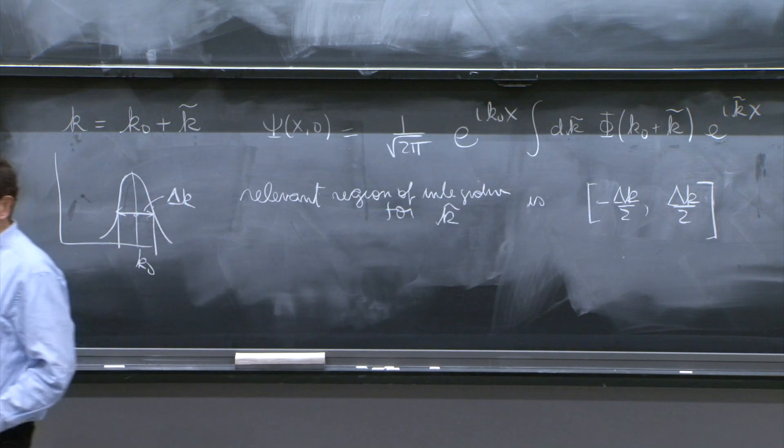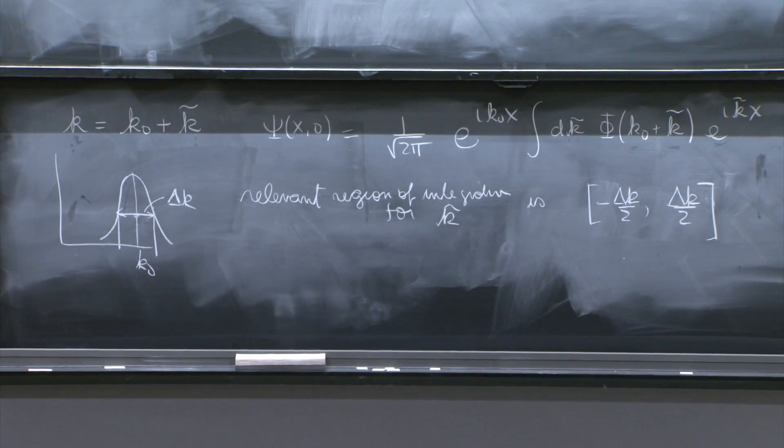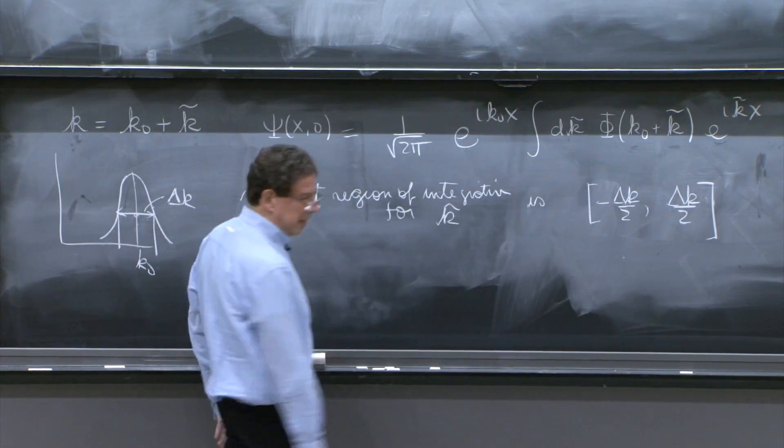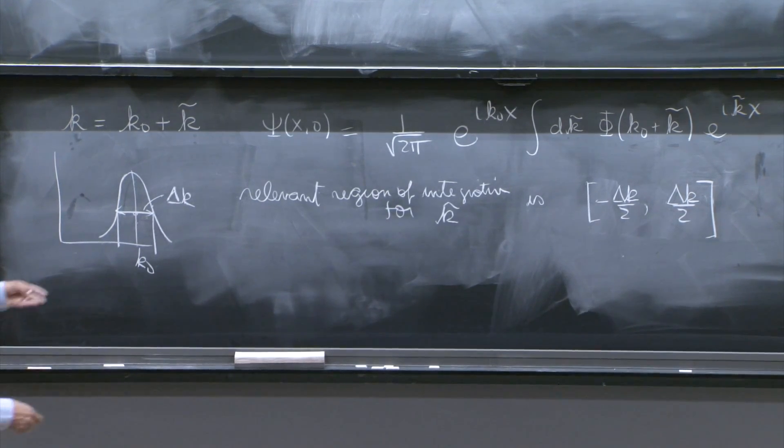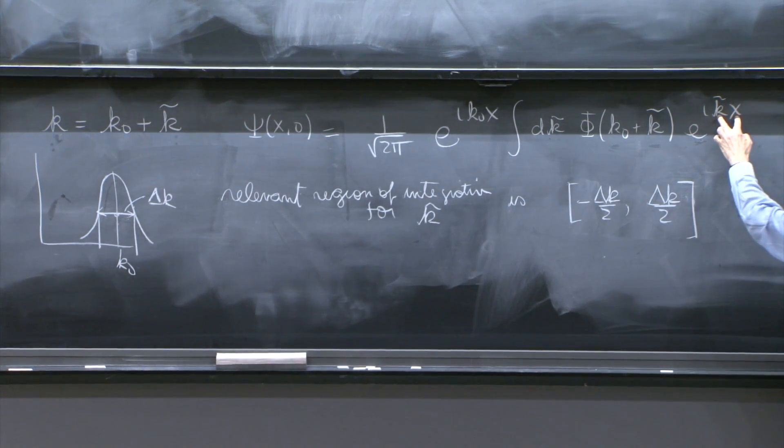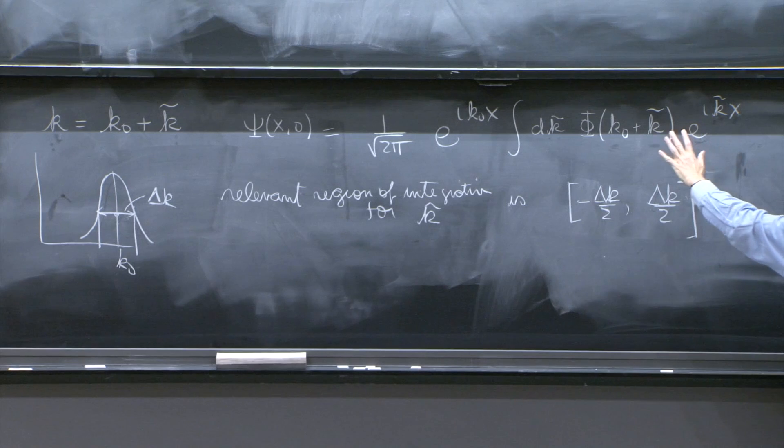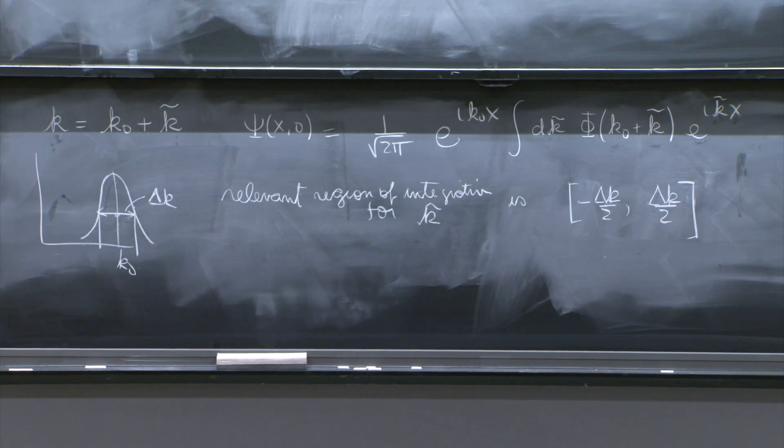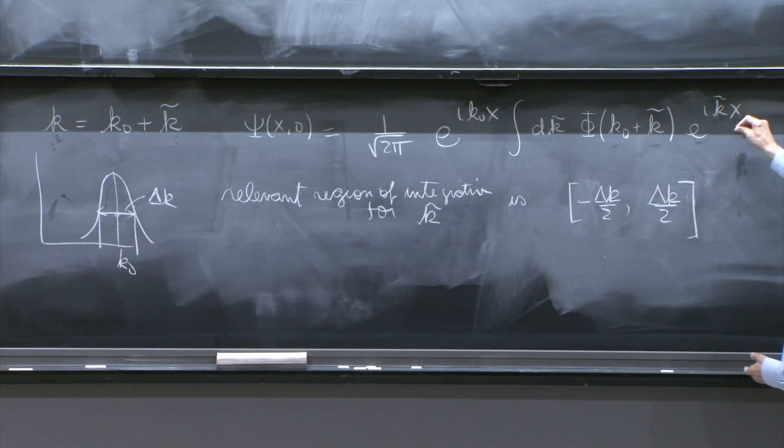So all the integral has to be localized in the hump. Otherwise, you don't get any contribution. Now, as you vary this k tilde, you're going to vary the phase. And as the phase changes, there's some effect on it. But if x is equal to 0, the phase is stationary. Because k tilde is going to vary, but x is equal to 0. No phase. Phase is stationary. And therefore, you will get a substantial answer.